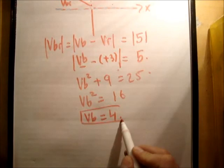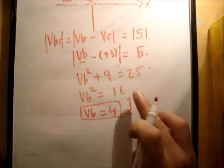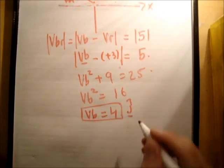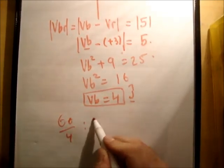And its direction is going to be j hat. So as a result, we're able to work out the time taken. So it's 60 divided by 4, giving us 15 seconds.